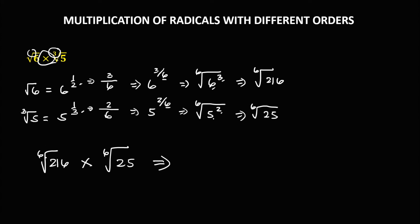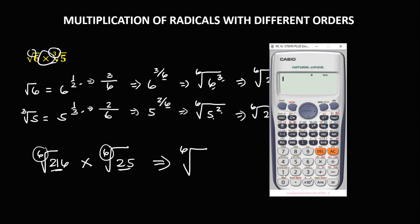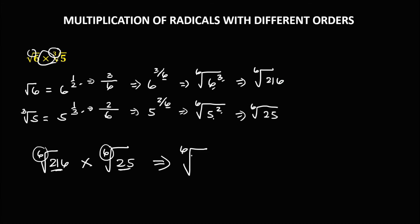Since they have the same root, we just multiply the numbers inside the radical. So we have the 6th root of 216 times 25. Since 216 times 25 equals 5400, the product is the 6th root of 5400.